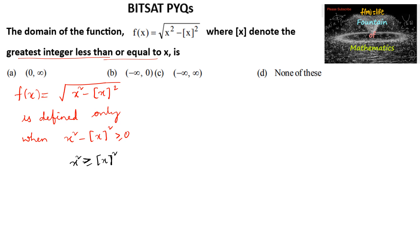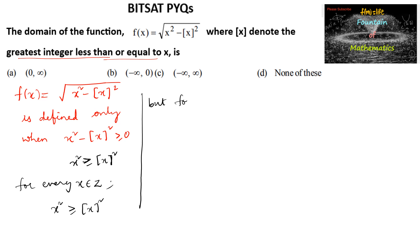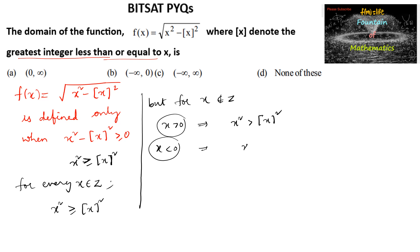For every x belonging to the integers, we can say x² ≥ ⌊x⌋². But for x as a non-integer, if x is positive, we get x² > ⌊x⌋². However, for x less than 0, we will get x² < ⌊x⌋².